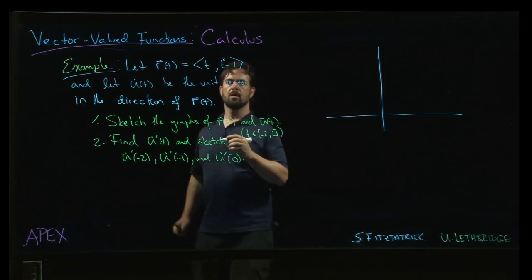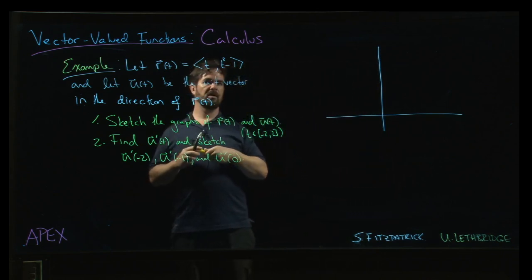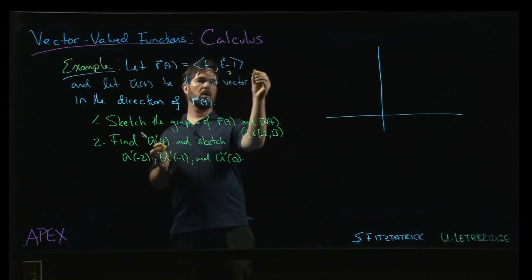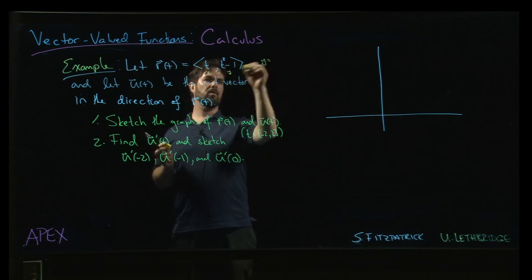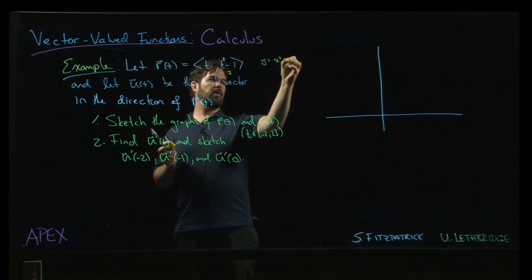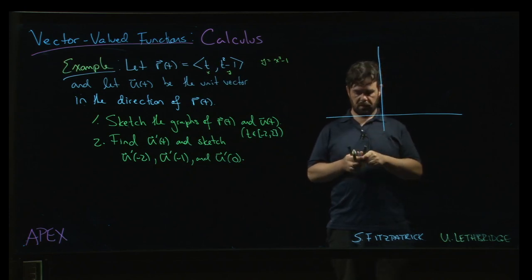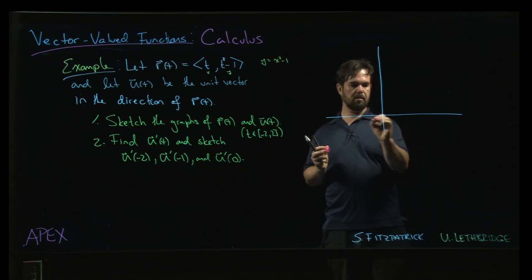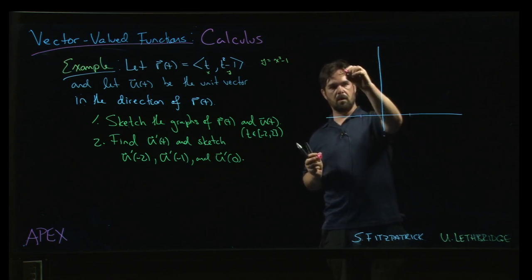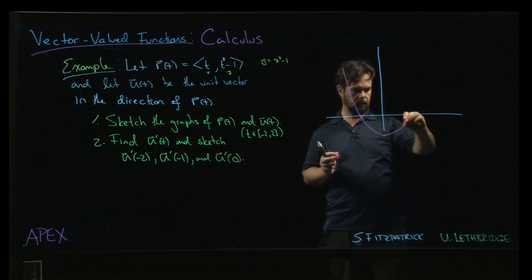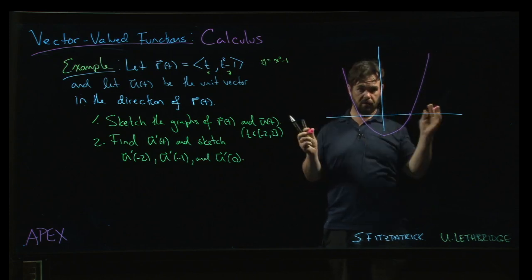One of the things that you might notice here is if you see, that gives us a parabola. It's a parabola opening upward, intercepts at minus 1 and 1, vertex down here. So that's our parabola.